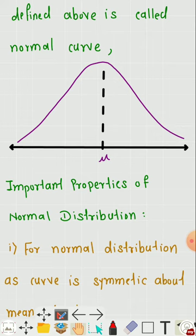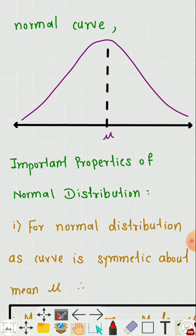The total area under the normal curve is unity, so the area under this curve always equals 1. The ordinate at the mean of the distribution divides the total area under the curve into two equal parts. The area under the normal curve between μ ± σ is 68.27%.